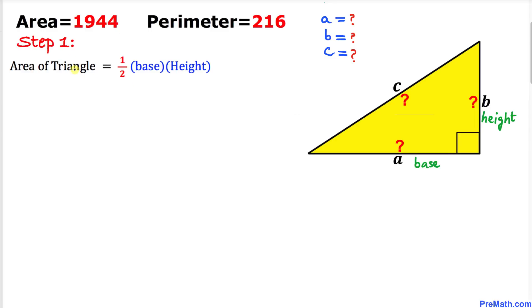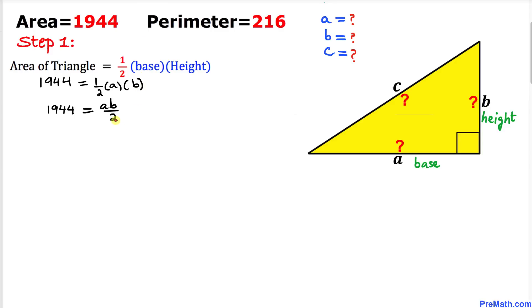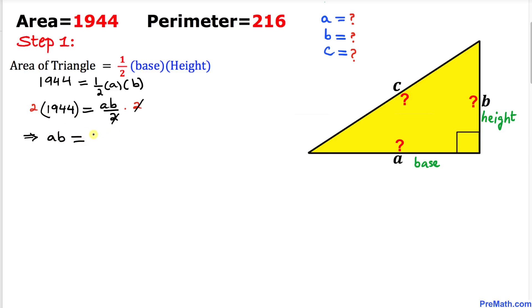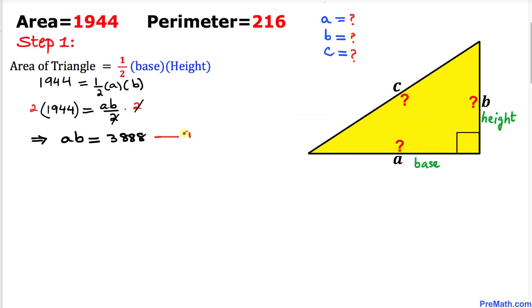Here's our very first step. Let's recall the area of a triangle formula: area equals one-half times base times height. In our case, our base is a and our height is b, and our given area is 1944. So we get 1944 equals one-half times a times b. Let's remove this fraction by multiplying by two on both sides, so we get a times b equals 3888. Let's call this equation number one.